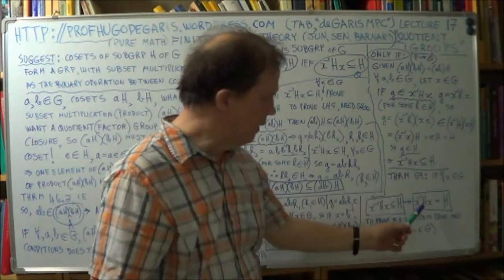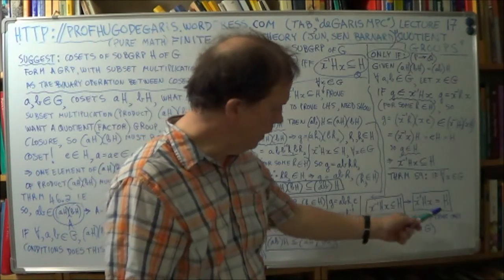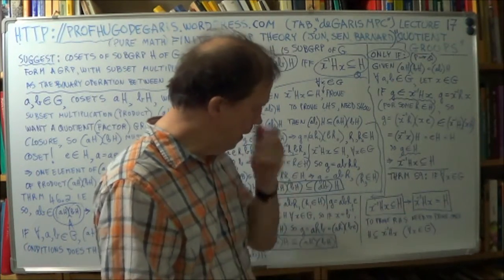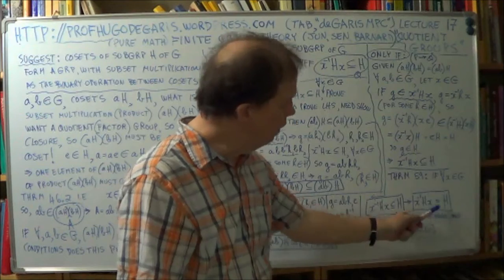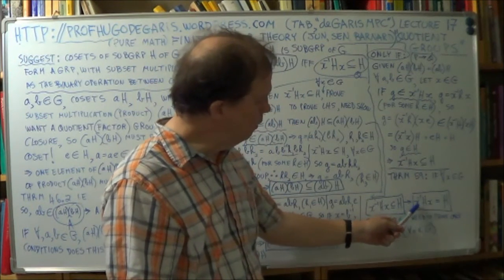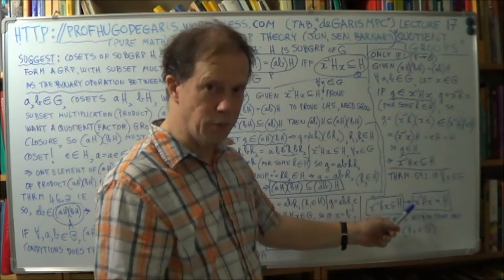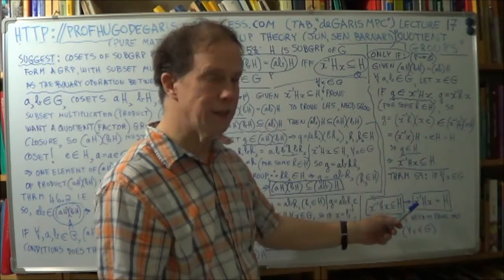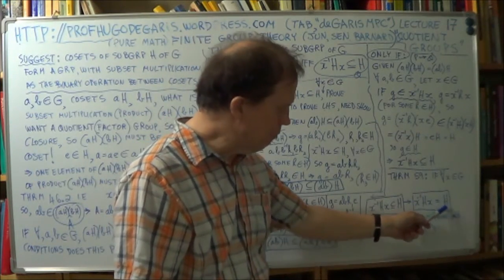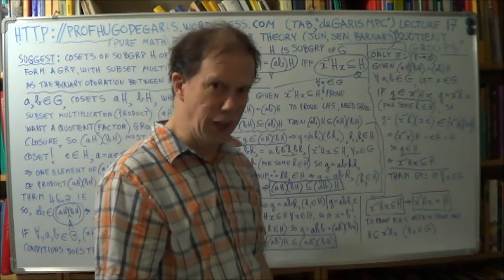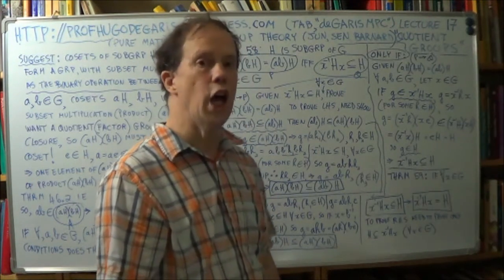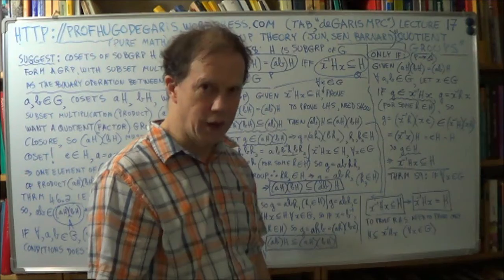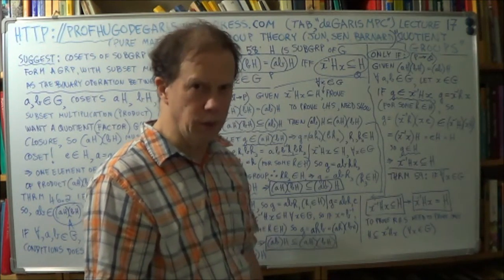So a subgroup H, if it has this property, if this is true for any element X of your group G, big G, if that's true for any X, that H, that subgroup, has a special name. It's called a normal, N-O-R-M-A-L, a normal subgroup.